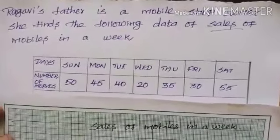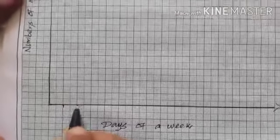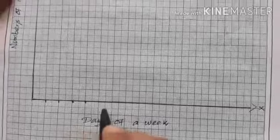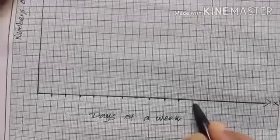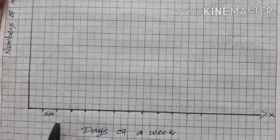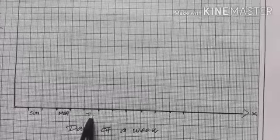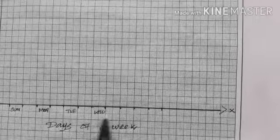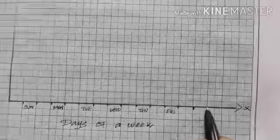Step three: mark the categories and the numbers. On the x-axis, mark the days — Sunday, Monday, Tuesday, Wednesday, Thursday, Friday, and Saturday. The bars should have equal width and equal space. In each space I am writing the day: Sunday, then leaving one space, then Monday, Tuesday, Wednesday, Thursday, Friday, and the last one is Saturday.